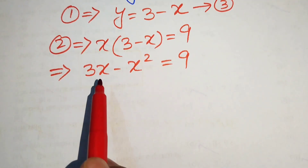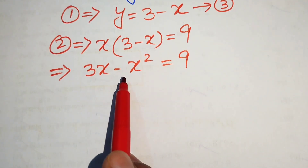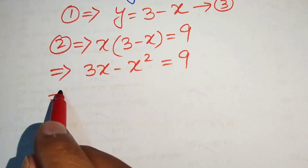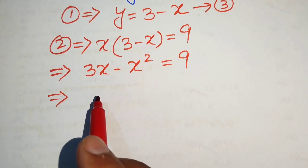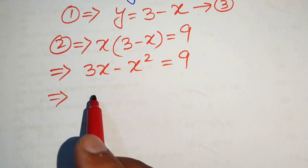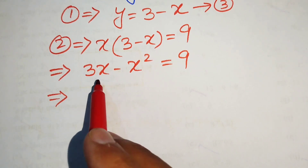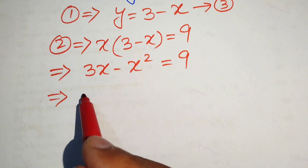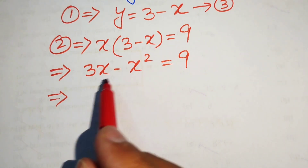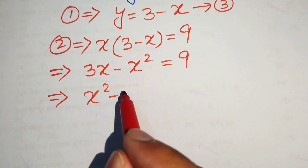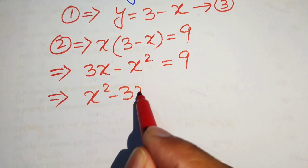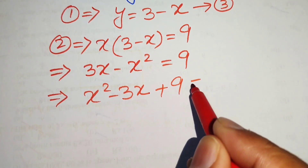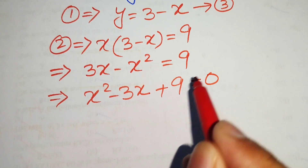This is a quadratic equation but not yet in standard form. We move the terms from the left-hand side to the right-hand side, giving us x squared minus 3x plus 9 equals 0.